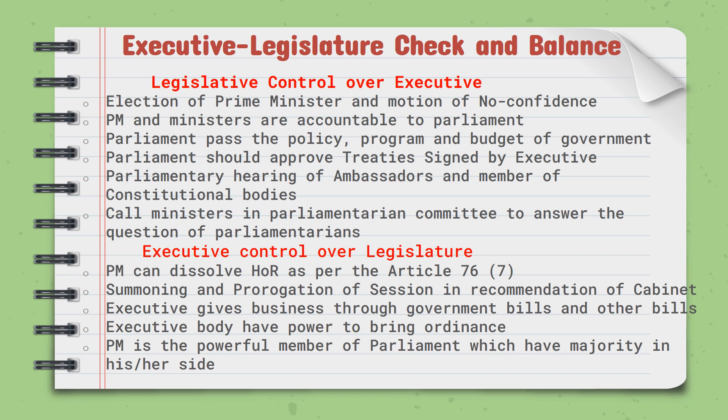How does the executive control the legislature? The Prime Minister can dissolve the House of Representatives as per Article 76(7). The President summons and prorogues the session of the house on the recommendation of the cabinet. The executive gives legislative business through government bills. The executive body has the power to bring ordinances, bypassing the legislature. The Prime Minister, as a powerful member of parliament with a majority, can have tremendous influence over parliament, and sometimes parliament appears as a rubber stamp of the Prime Minister.